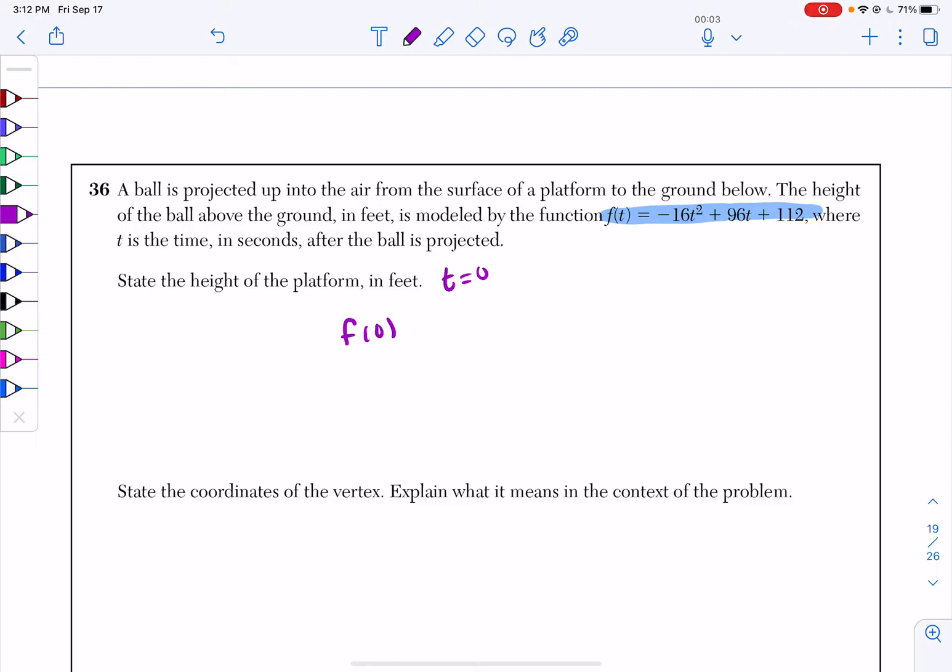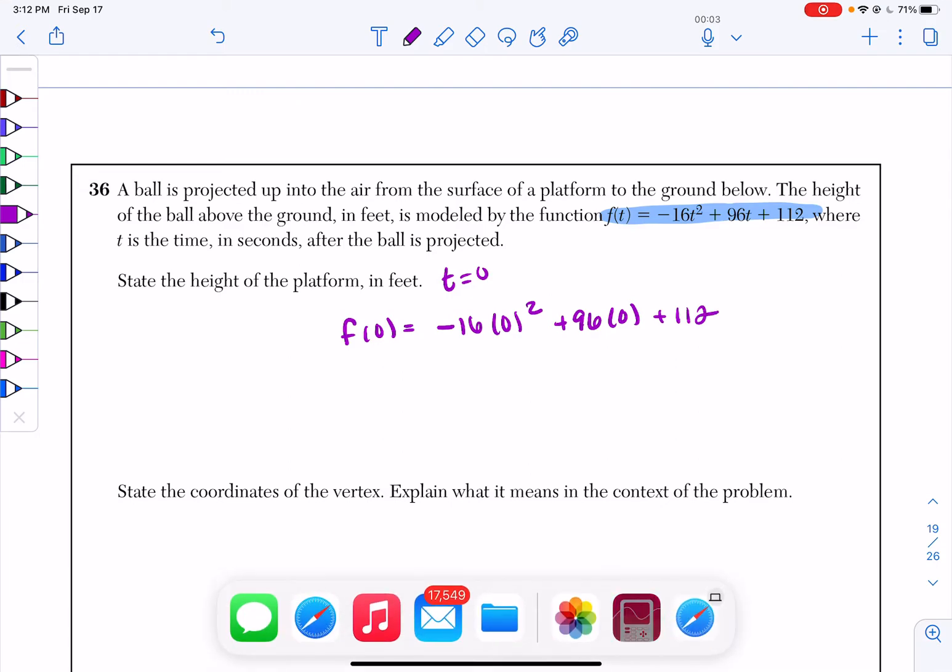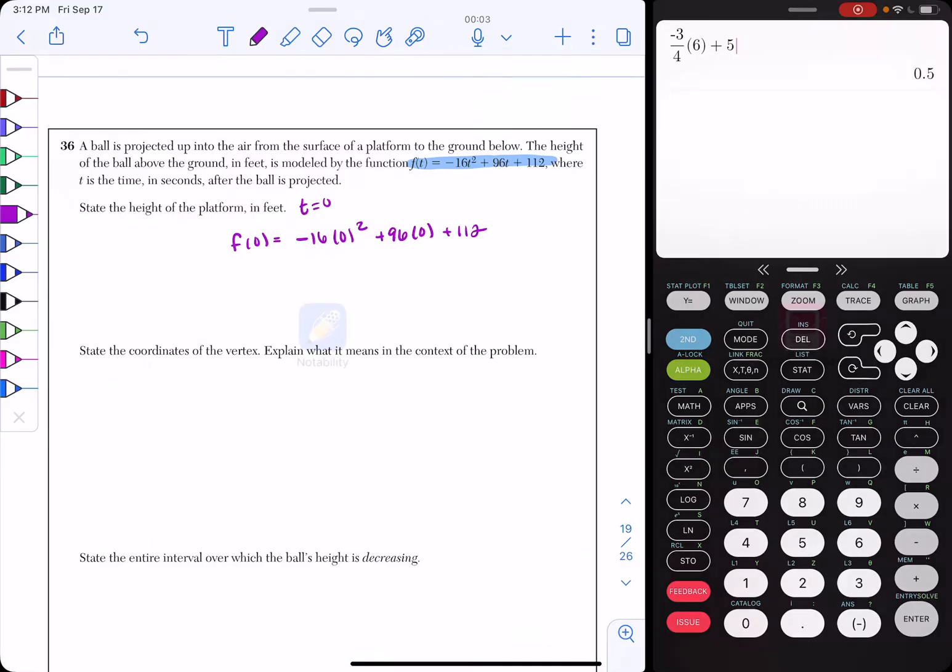So, I have f(0) = -16(0)² + 96(0) + 112. And what we're going to do is we're simply going to type that into our calculator. I mean, I already know what the answer is going to be because I know PEMDAS in my head. But if you don't, you can just do -16, parenthesis zero squared plus 96 times zero plus 112. And if you look, that's going to be equal to 112 feet. So, that is your final answer.